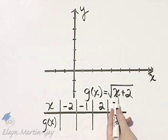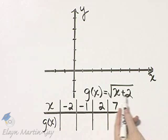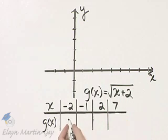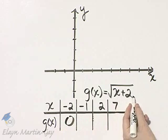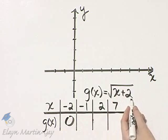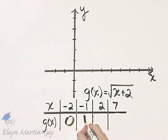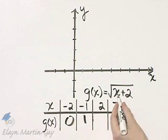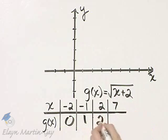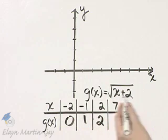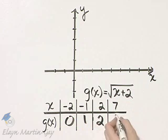If x is negative 2, I have the square root of negative 2 plus 2, that's the square root of 0, which is 0. If x is negative 1, negative 1 plus 2 is 1, the square root of 1 is 1. If x is 2, 2 plus 2 is 4, the square root of 4 is 2. And if x is 7, 7 plus 2 is 9, the square root of 9 is 3.